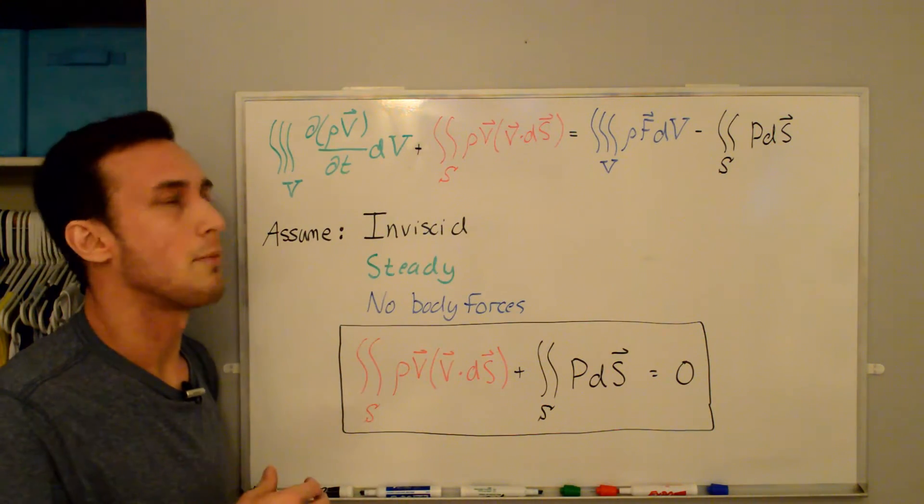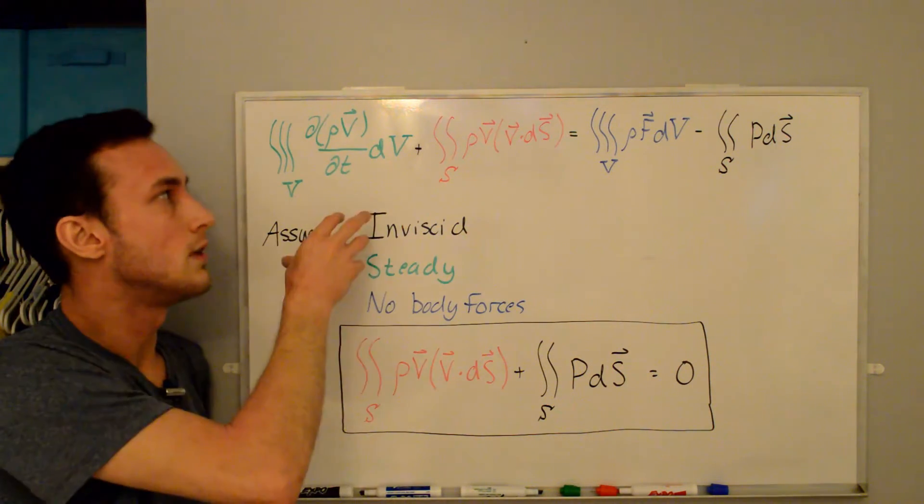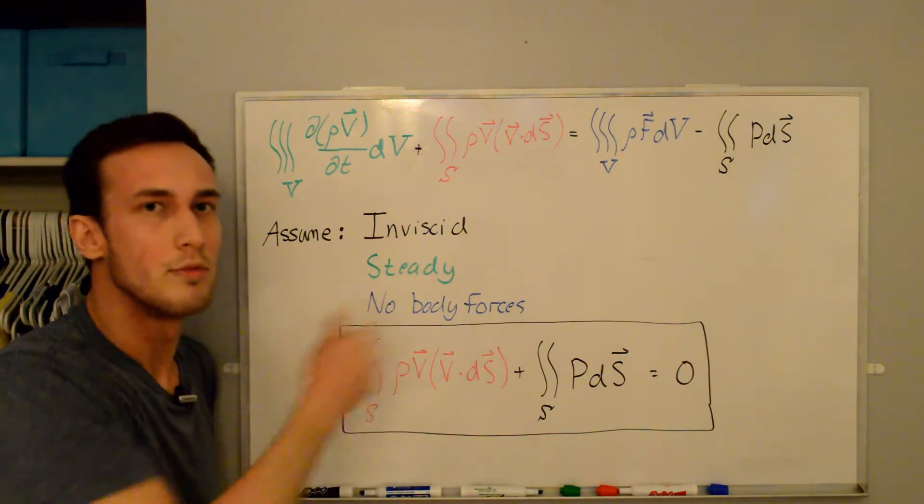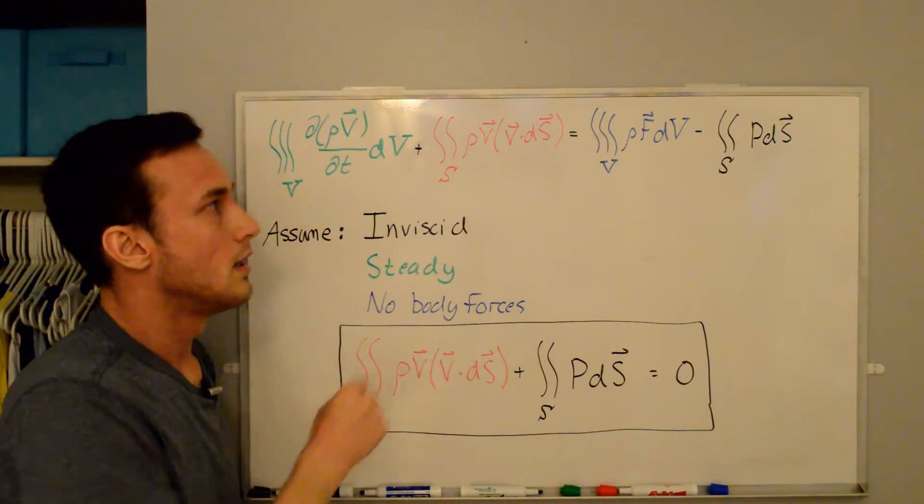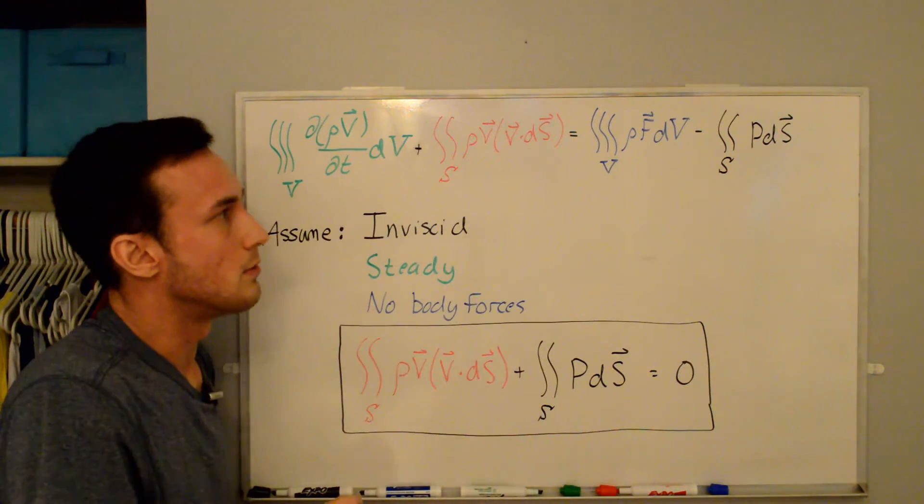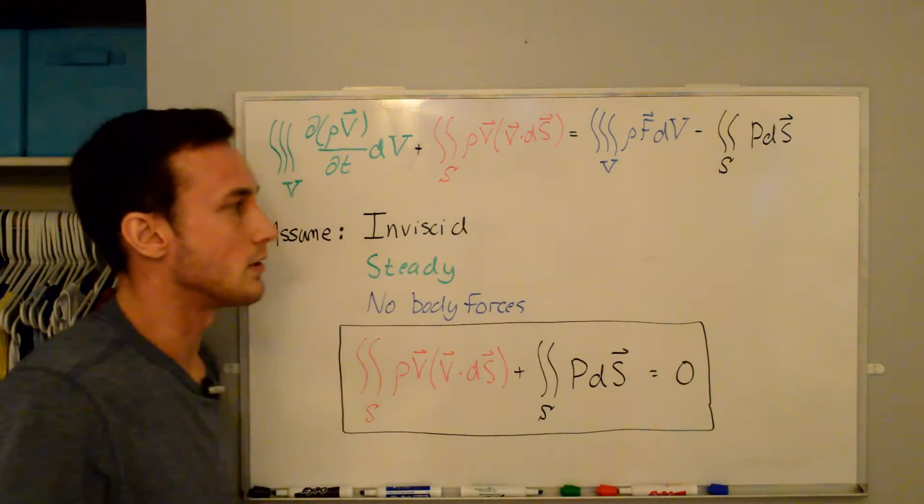The first term here is the time rate of change of the momentum in the control volume. The second term is the convective movement of momentum across the boundaries of the control volumes over the surfaces. The term here is due to body forces and then this is the pressure term.